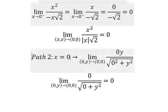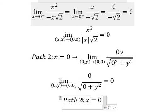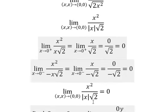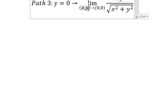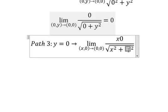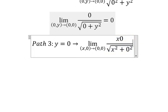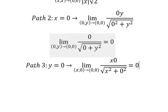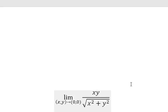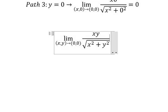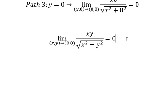Now let's go to path number three, which is about y equal to zero. We get the same result, and this one gives us zero. We can see that everything is zero, so the value of this one equals zero. This is the end — thank you for watching.